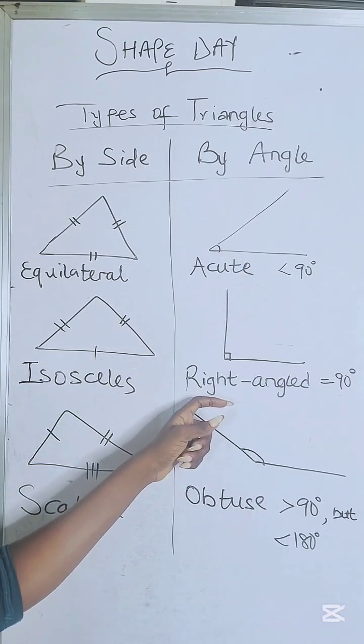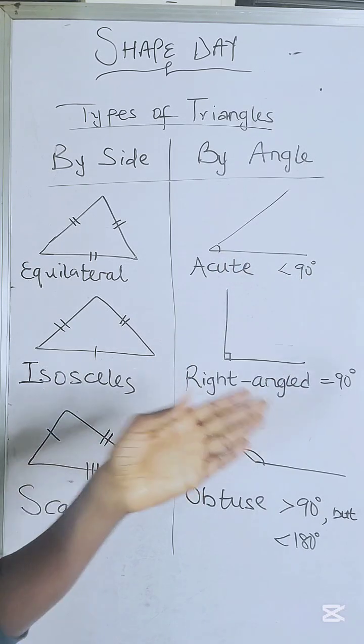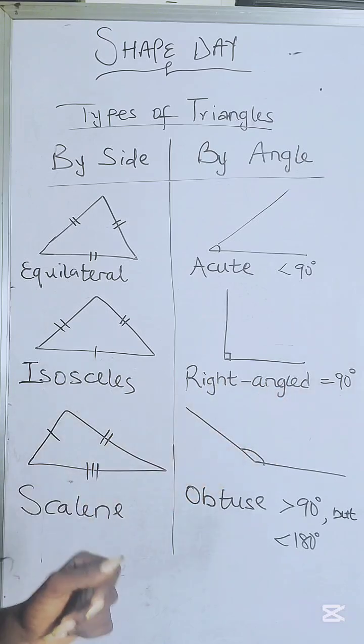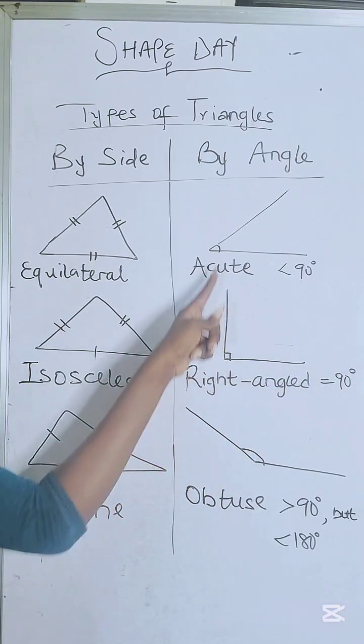The second one is your right angle triangle. Everybody knows this. The corner of your room right now is a right angle triangle. So it's always sitting up straight.